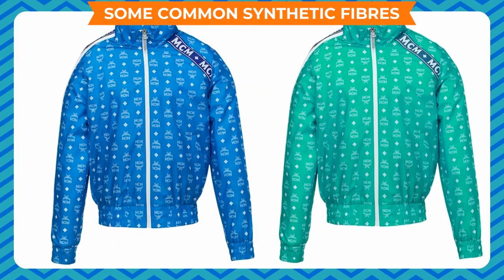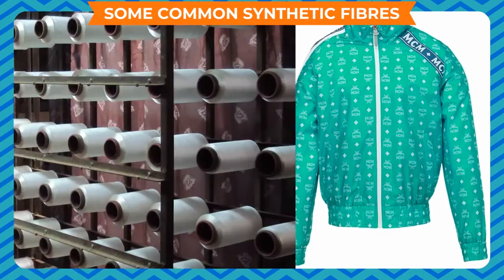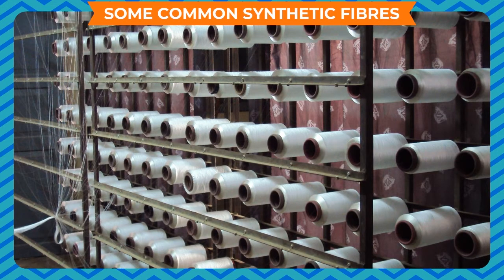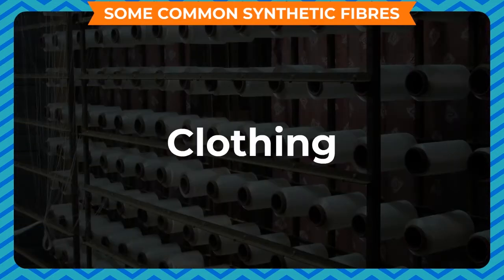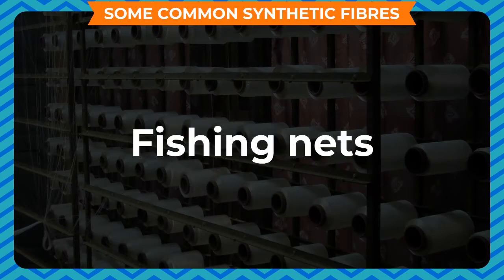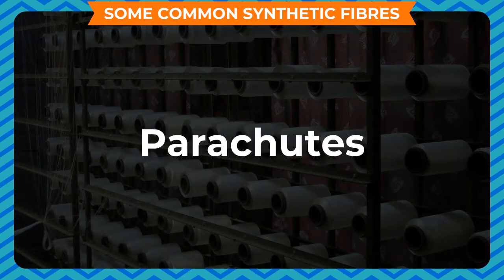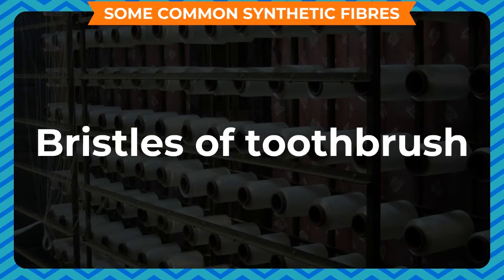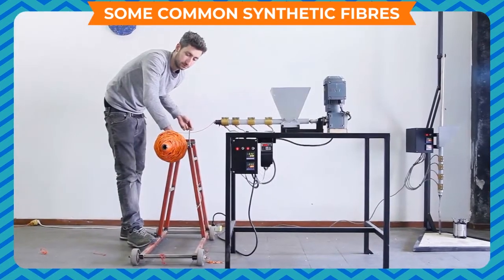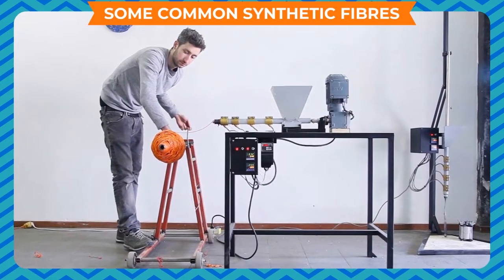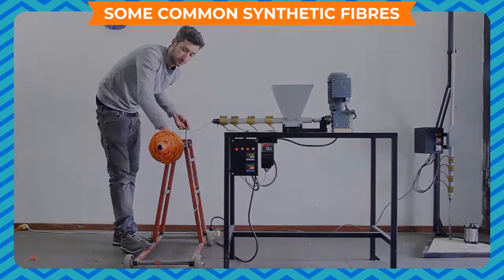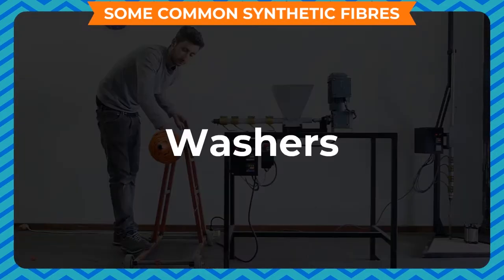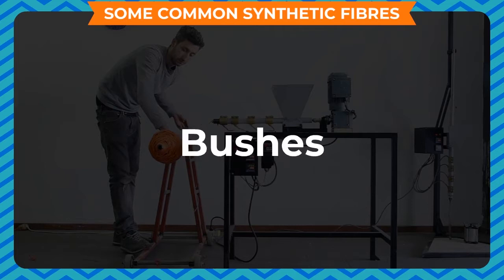Uses of Nylon: It is used in the textile industry for making yarn. It is used for preparing clothing, fishing nets, ropes, parachutes, bristles of toothbrush etc. It is also used in making small parts of machines like washers, pulleys, gears, bushes etc.